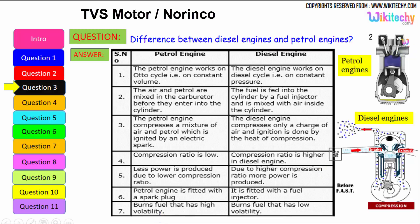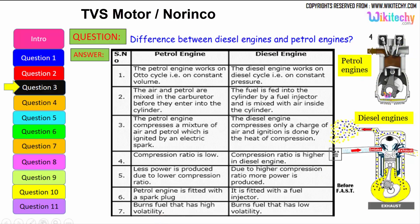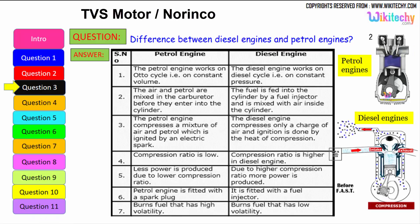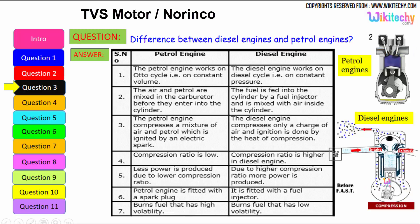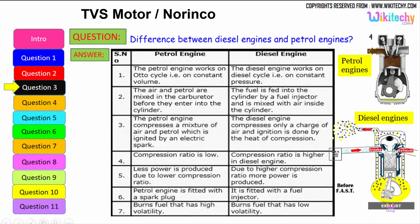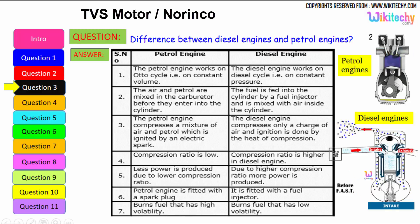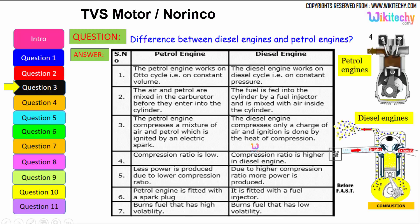The petrol engine burns fuel with high volatility — petrol is highly volatile. The diesel engine burns low-volatility liquid, as diesel is a low-volatile liquid. These are some of the key differences between the petrol engine and the diesel engine.